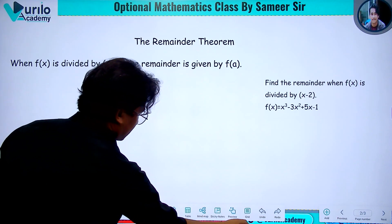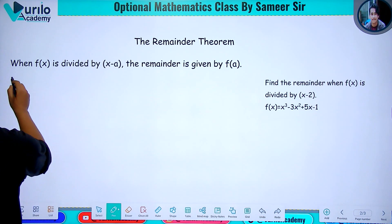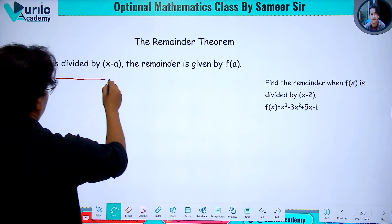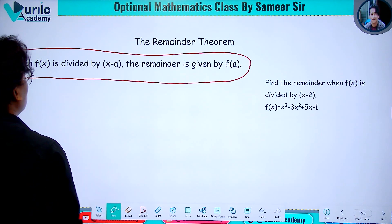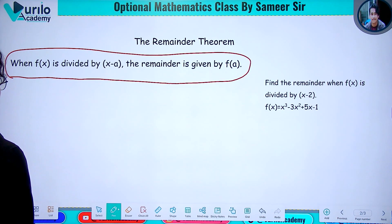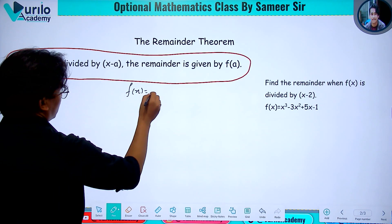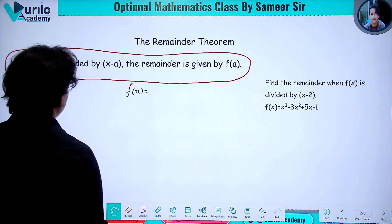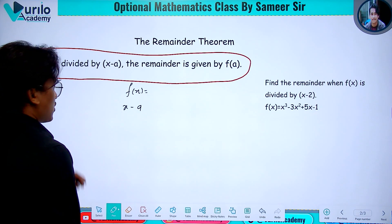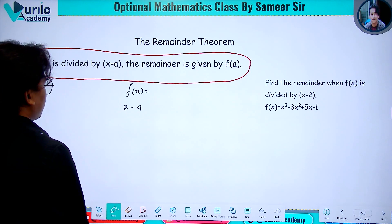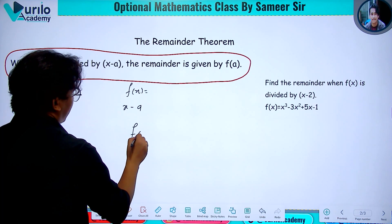What does the Remainder theorem mean? When f(x) is divided by (x minus a), the remainder is f of a. This means f of x is a polynomial, and when divided by the linear function (x minus a), the remainder we get is f of a.